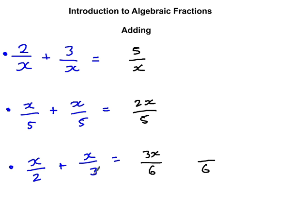Same again with this one. I've got 3, I need to get to 6 times by 2, so times the x by 2. So I then therefore end up with 3x plus 2x, which is 5x over 6. So I do the same idea that I would with normal fractions.